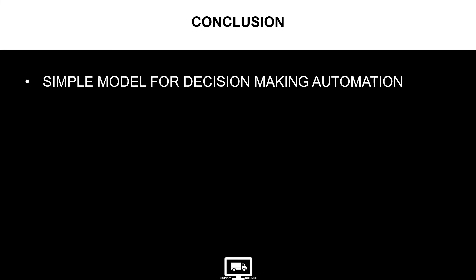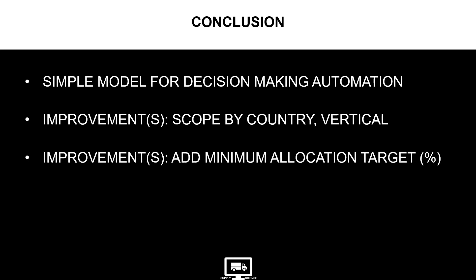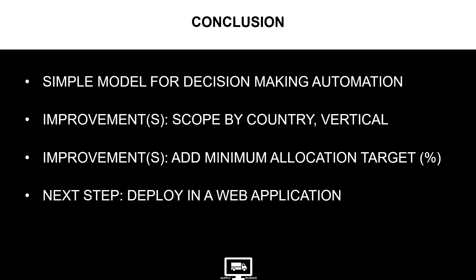To conclude, you have built a very simple model for decision-making automation. You can of course improve the model by adding constraints — for instance, budget allocation by country or vertical. For more diversity, you can put a minimum threshold by management guidelines. The next step would be to deploy this code in a web application so all directors are able to perform this calculation and simulate several scenarios. I hope this video gave you enough insights on how to use linear programming to automate a decision-making process.